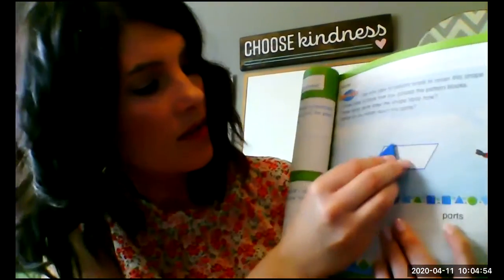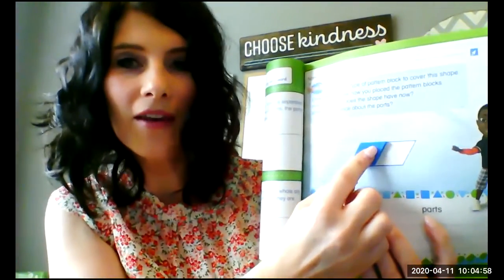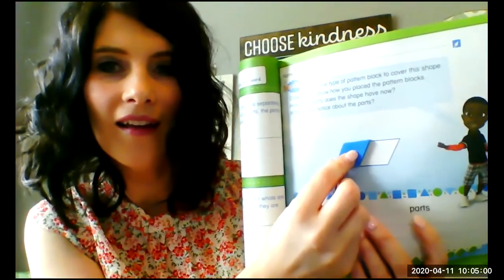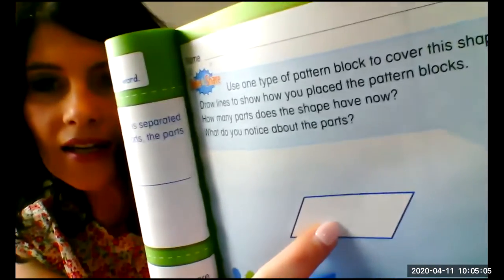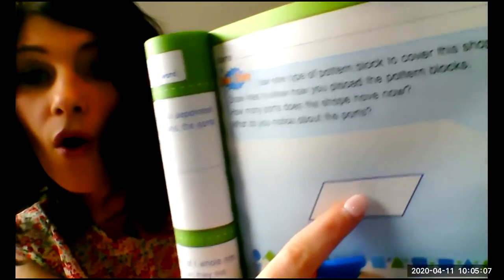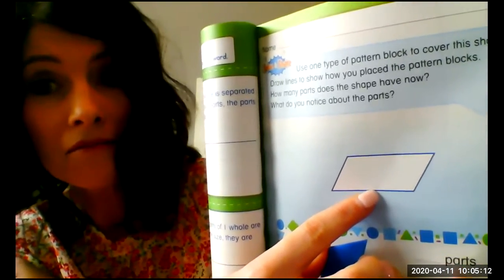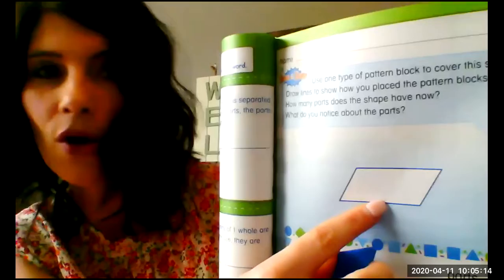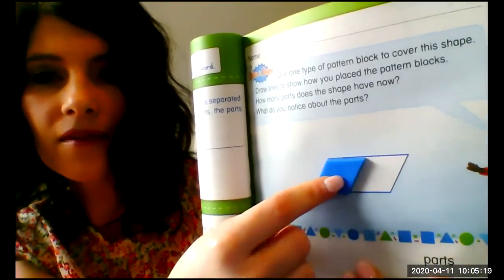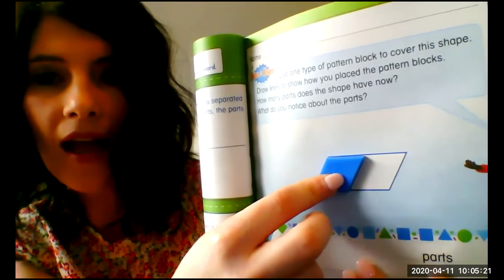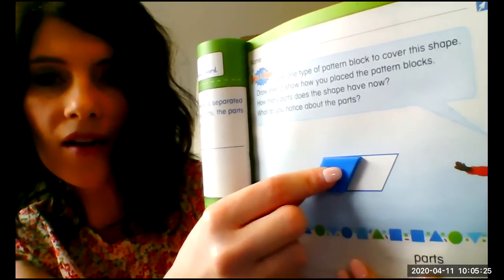Now if I have a shape here and it is divided — I've drawn a line right here — I have divided it into a half. Here is a half; that would be my one half. I have two parts, but I took one away, so now I have one half.